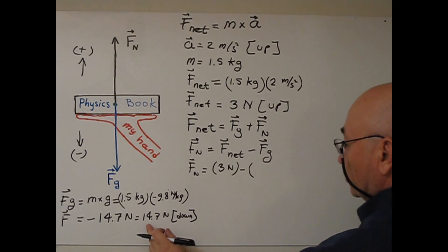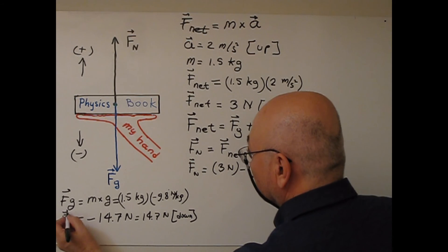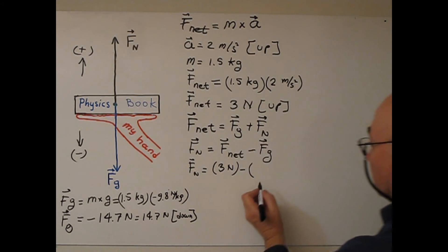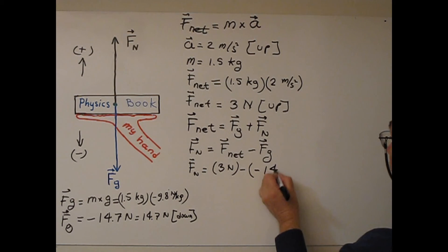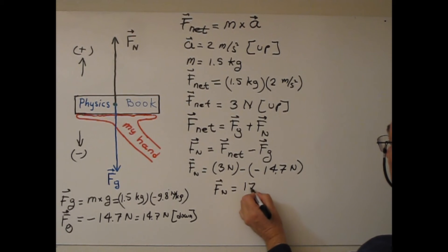So if I substitute this number here, Fg, 14.7 newton. So when I do this calculation, F normal, I get 17.7 newton. Because positive up.